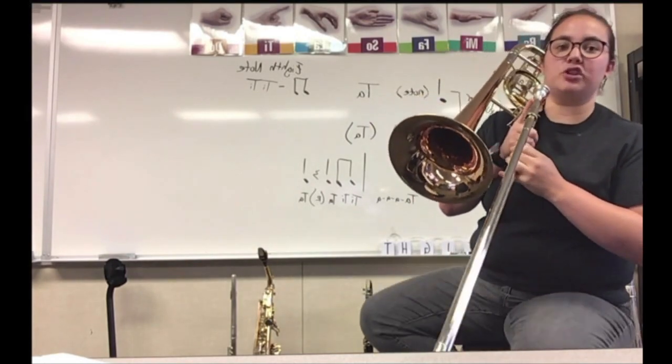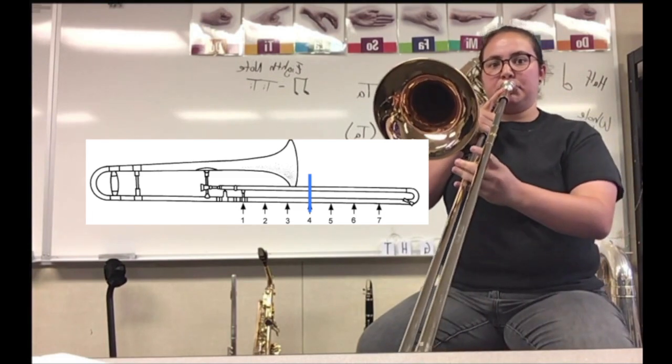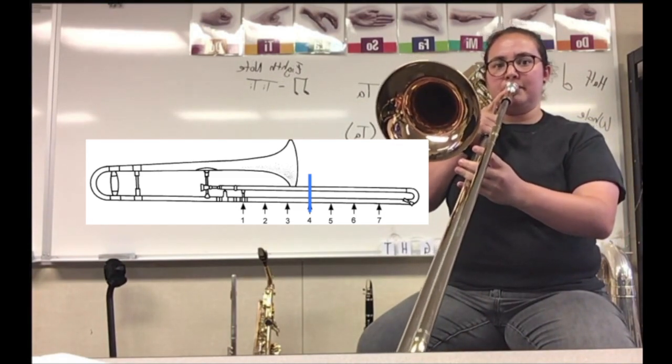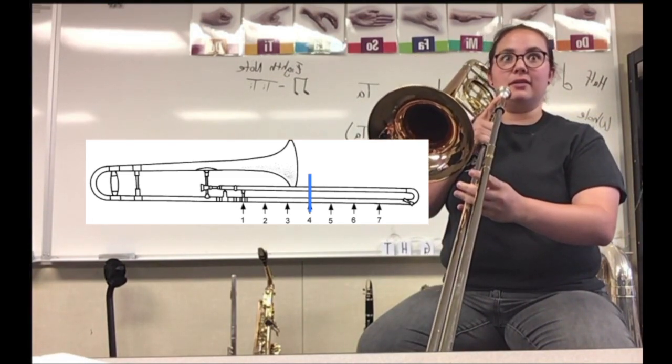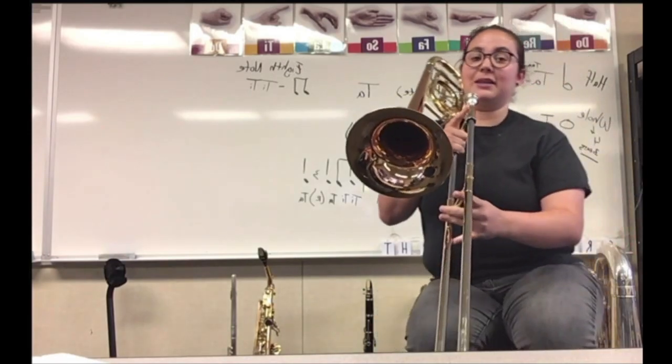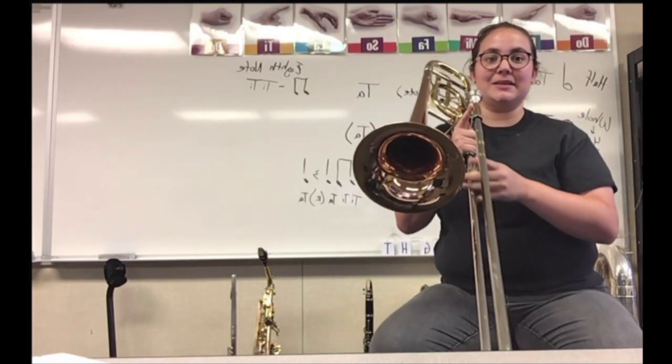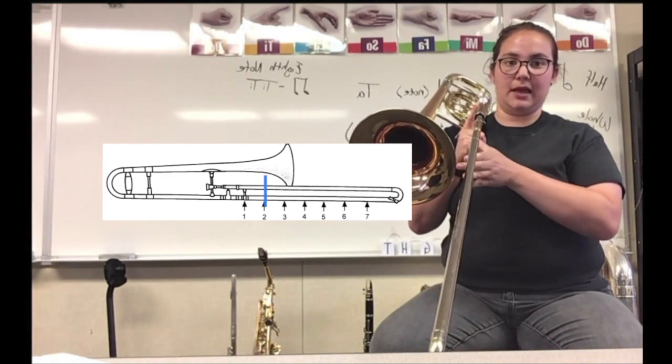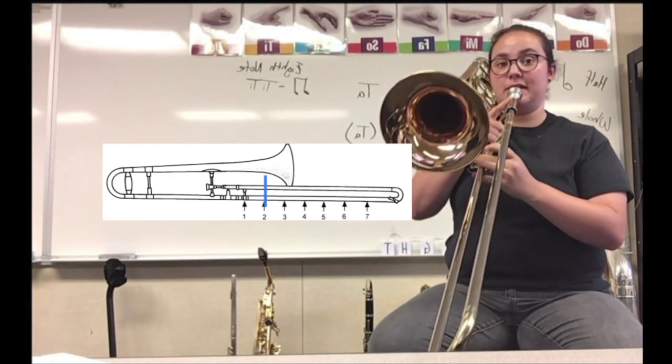Our next note is G, which is fourth position using that faster air. Our seventh note now, I have to be able to count for a second there, is A. And A is going to be second position, so between the bell and first position, and that's going to use fast air as well.